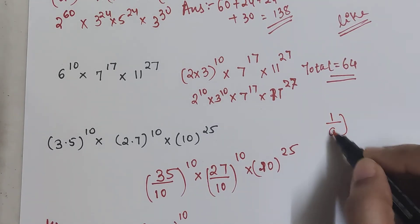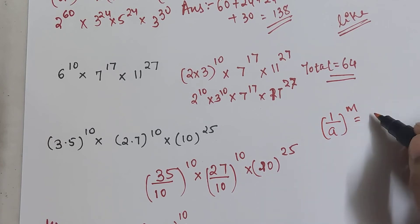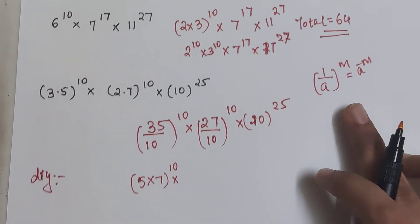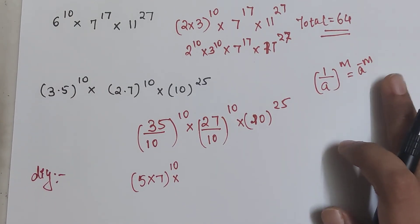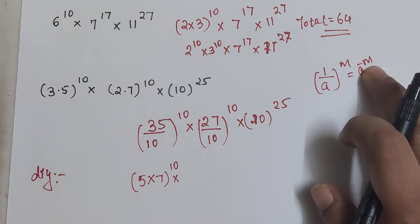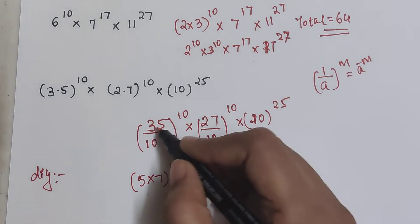Please understand, 1 upon a the whole raised to m is nothing but a raised to minus m. You can shift your denominator to the numerator and just put the index as negative for that particular fraction.